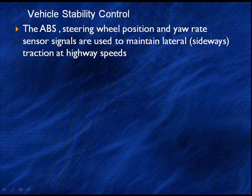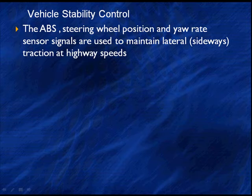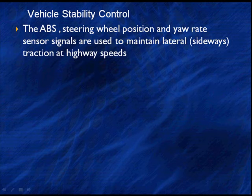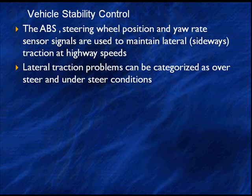In order to get to vehicle stability control, we're going to have to have the ABS along with steering wheel position and yaw rate signals to maintain lateral sideways traction at highway speeds. This will keep us from doing those horrible things like jackknifing and rollovers. Lateral traction problems can be categorized as oversteer and understeer conditions. Oversteer is when you turn the wheel and the back end comes around, very much like a jackknife in a truck. Understeer is when you turn the steering wheel and the vehicle continues to go straight — it doesn't respond to the turning.